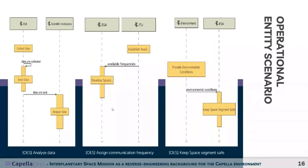Next, we defined all the scenarios in which the mission will operate using operational entity scenario (OES) diagrams in Capella. For example, one diagram shows the workflow for collecting and analyzing data and all actors involved. Another covers the assignment of communication bandwidth, where the ITU establishes the availability of frequencies and provides a precise range to mission partners to be used during communications.